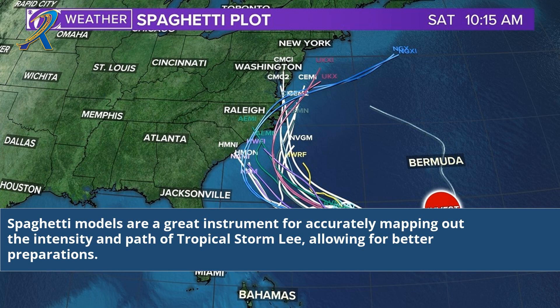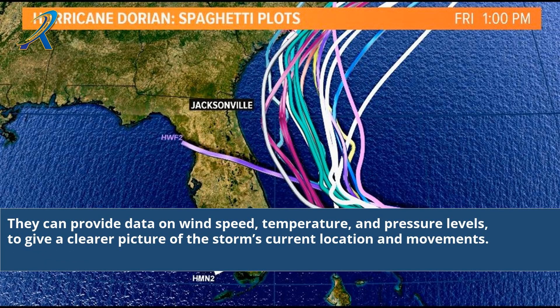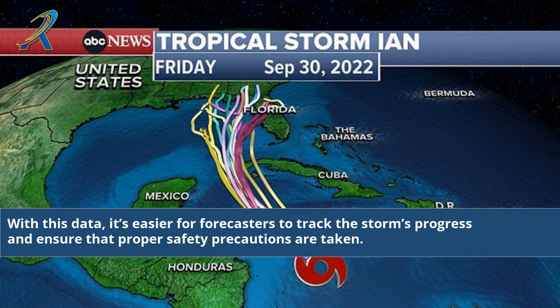Spaghetti models are a great instrument for accurately mapping out the intensity and path of Tropical Storm Lee, allowing for better preparations. They can provide data on wind speed, temperature, and pressure levels, to give a clearer picture of the storm's current location and movements. With this data, it's easier for forecasters to track the storm's progress and ensure that proper safety precautions are taken.